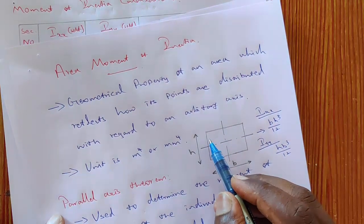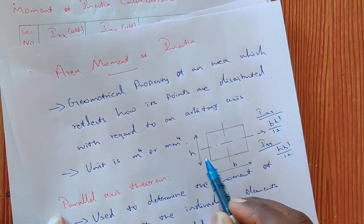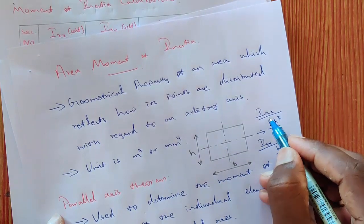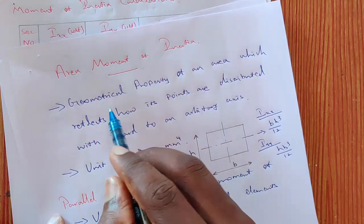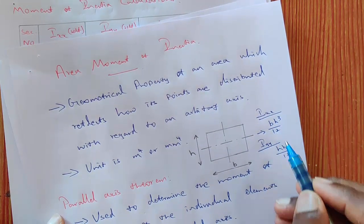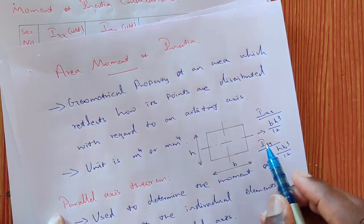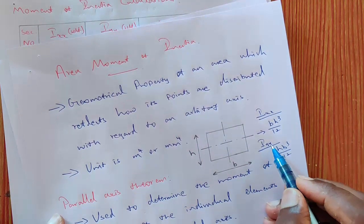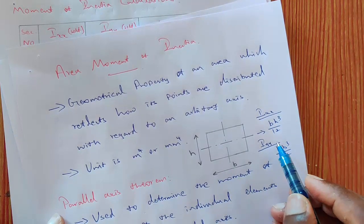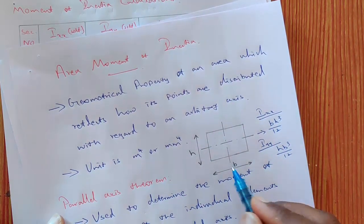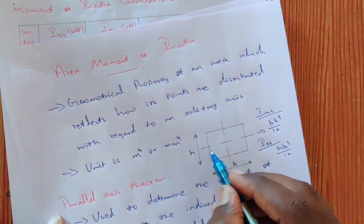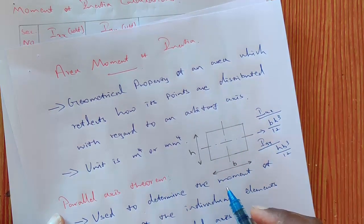Here is an example rectangle. The height is h and the width is b. The Ixx, that is the area moment of inertia about the x-x axis, is bh³ divided by 12. And the Iyy, that is the area moment of inertia about the y-axis, is hb³ divided by 12. This is Ixx and Iyy for a rectangular section when the centroidal axis coincides with the x-axis or the y-axis.